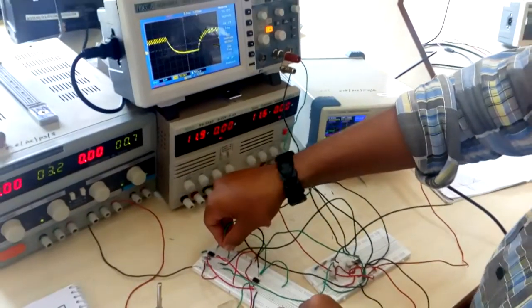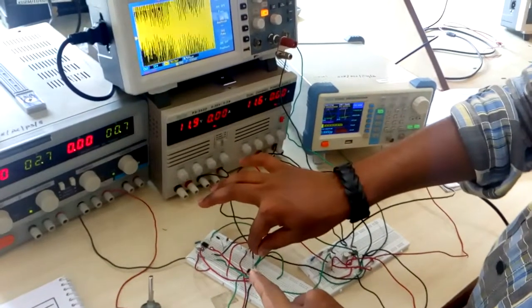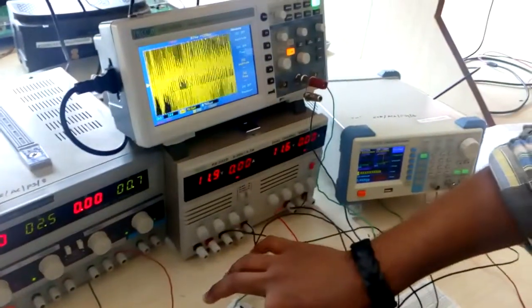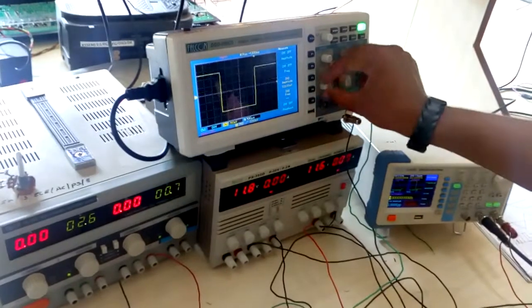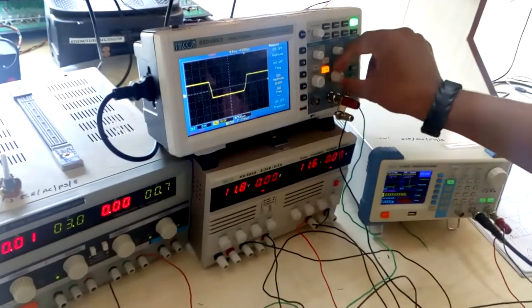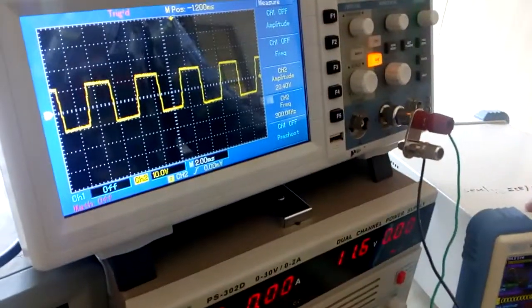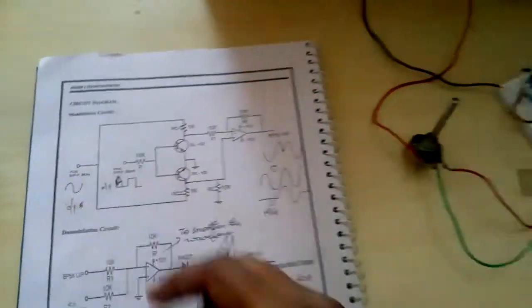Now check the output at pin 6. You should get the demodulator output, which is a square wave at 200Hz, 20 volts. Since you had given 200Hz as input, it's working correctly.